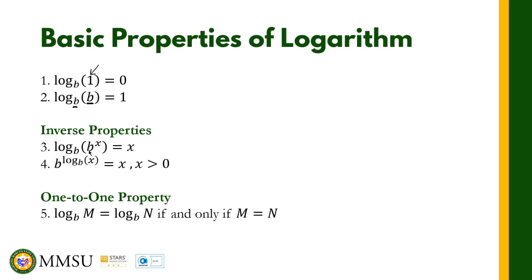For number three, we have log_b(b^x) = x. The logarithm of b in base b is 1, right? So whatever the exponent is, that becomes the answer. This is the third property of logarithms.